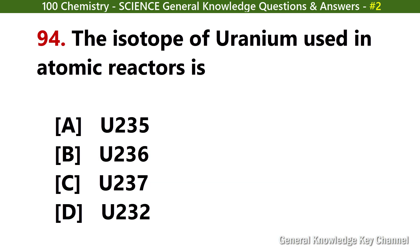The isotope of uranium used in atomic reactors is? Answer A: U-235.